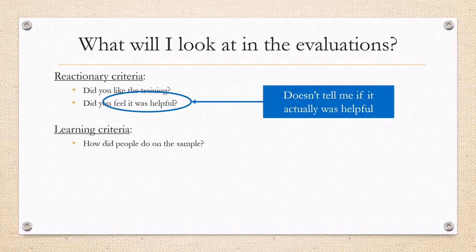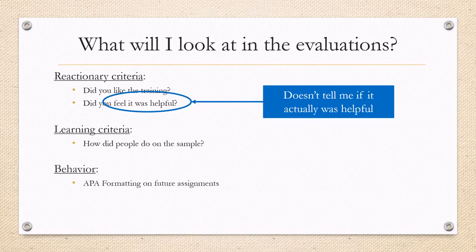So I need some learning criteria. How did people do on the sample that I asked you to correct and upload to the evaluation survey? And the nice thing about the way this is set up is we have some future assignments that will also be graded on APA formatting. So I can compare your behavior and implementing this new information to your future assignments. And then the results would be your grades. Now APA formatting is not a major component of your grades. So it's not going to have a huge impact on your overall class grade. But it may have an impact on your assignment grades.